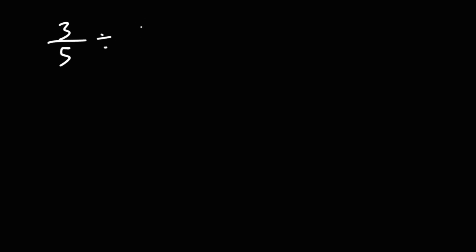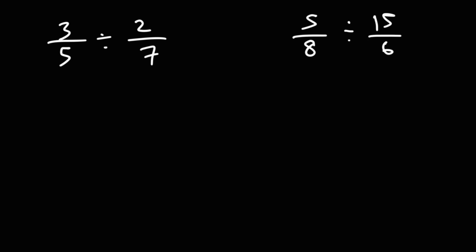To review: whenever you're adding or subtracting fractions you need to get common denominators, and when you're multiplying two fractions you need to multiply across. When dividing two fractions you need to use the expression keep change flip to convert the division problem into a multiplication problem.